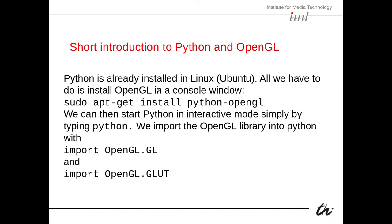Python is already installed in Linux, for instance Ubuntu. All we have to do is install OpenGL in the console window. We need to be careful that Python traditionally had two versions — number two and number three — but support for Python 2 stopped, so we should all be using Python 3. Depending on your version of Linux, you might have Python 2 installed by default, so you need to install Python 3. If you freshly install Ubuntu with the newest version, it should already come with Python 3.